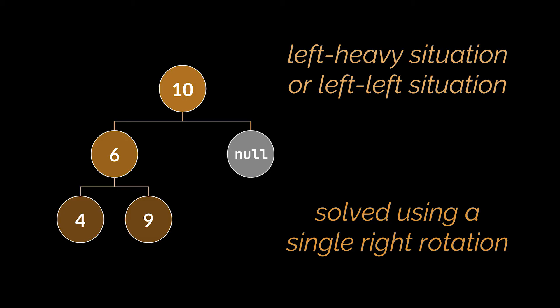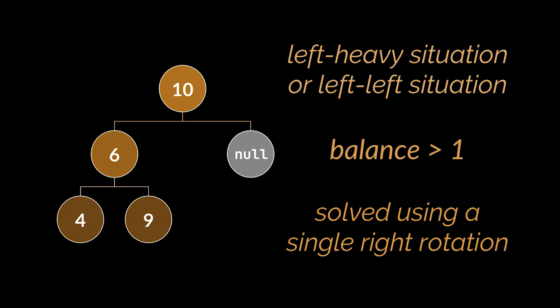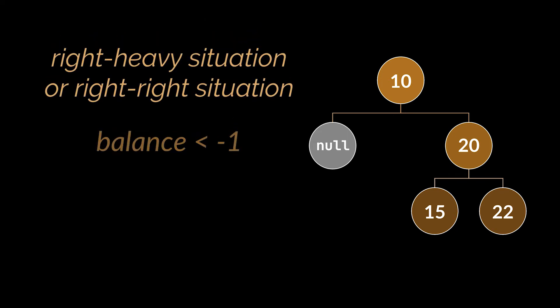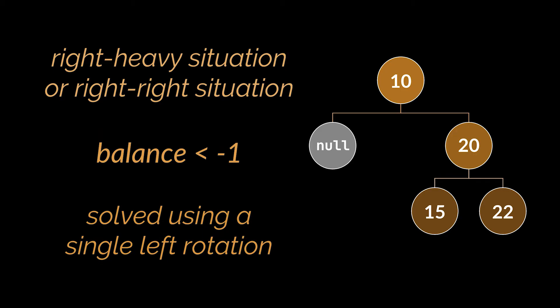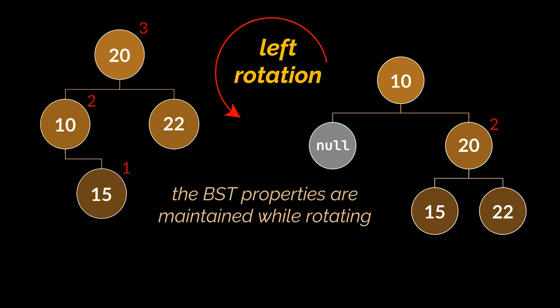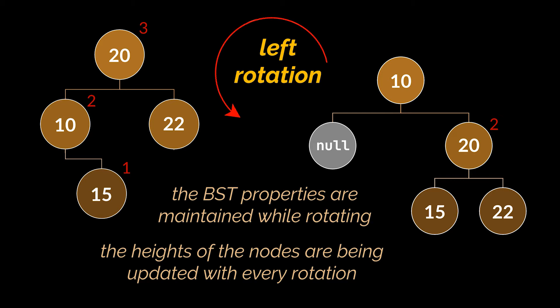After applying a right rotation, the new root's balance becomes 1 minus 2 equals minus 1, so the tree is now balanced. This case — fixed using a single right rotation — is called a left-left or left-heavy situation, encountered when the balance of a node is greater than 1. The second case is symmetric: a right-heavy situation where the balance is minus 2, solved with a left rotation. Binary search tree properties are maintained throughout all rotations.